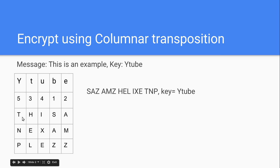Next, you fill in the message left to right and then down, left to right and then down, into the table. So T-H-I-S-A-N-E-X-A-M-P-L-E — I made all the letters capital for easier reading — and then the Z's are just to fill in the rest of the table. If you don't add those extra Z's, X's, Q's, or whatever void letters you want to use, it'll be a lot harder to decrypt for the person receiving the message.